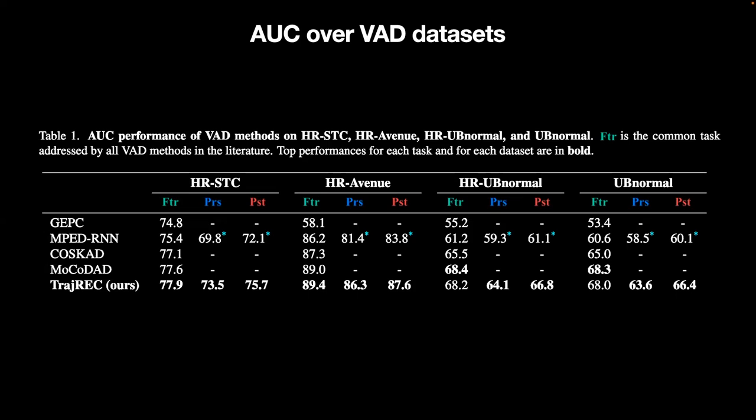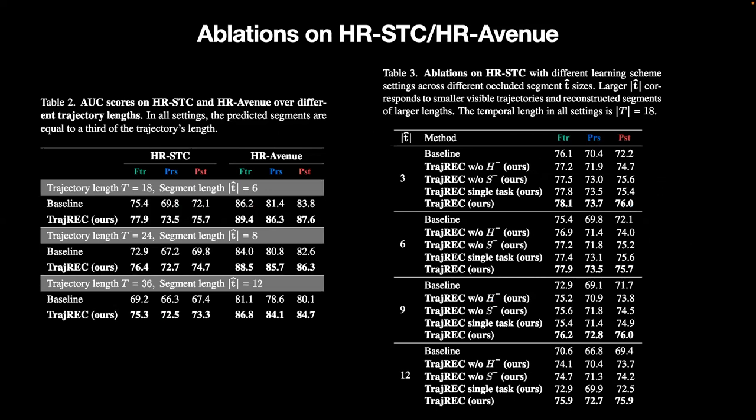Our method blends all three tasks in a single multi-task setting and can outperform previous strong baselines across all three tasks. We additionally provide ablations over increased trajectory lengths and larger occluded segments that are reconstructed, as well as different combinations of the triplet loss used for the latent representation. The combined settings show better performance in comparison to previous approaches used as a baseline, as well as different variations of our approach.